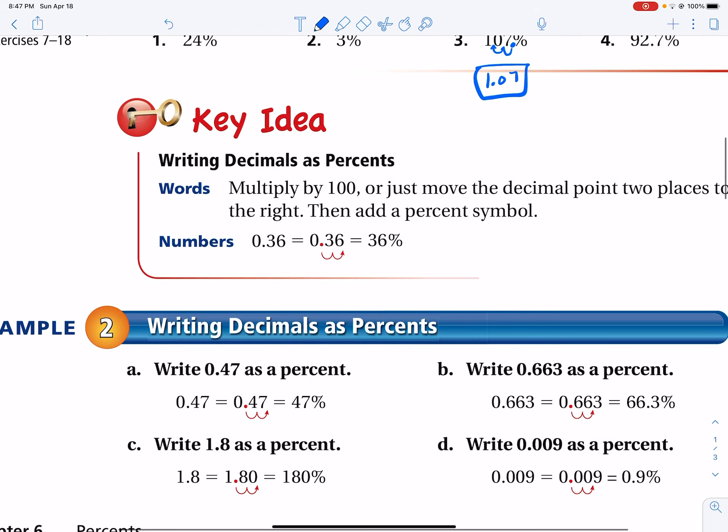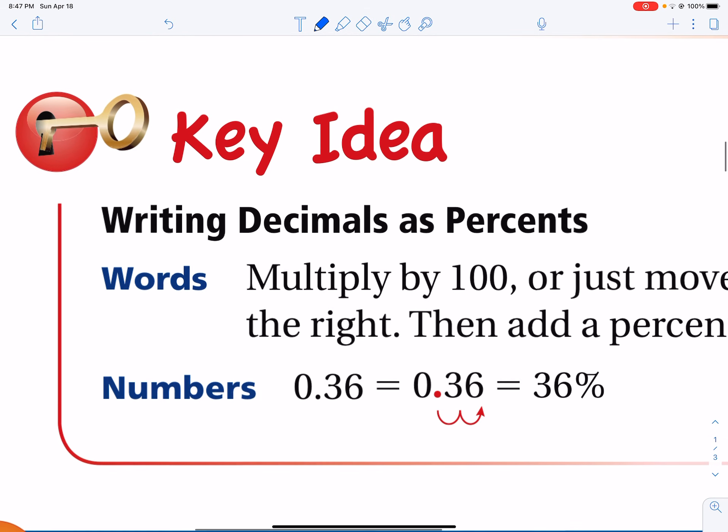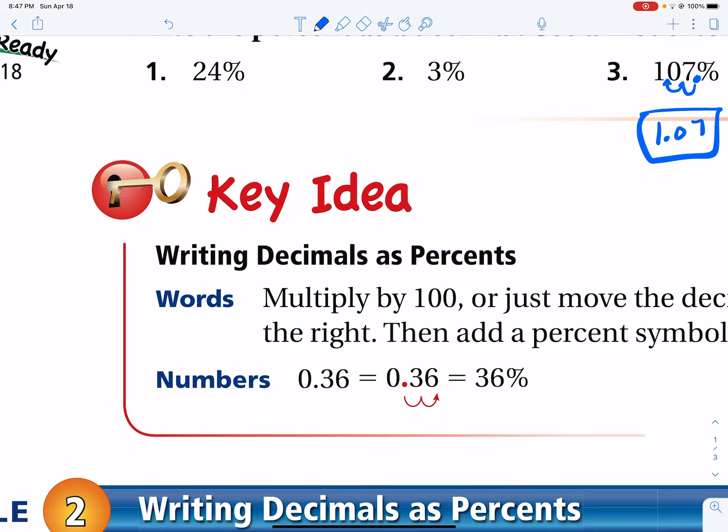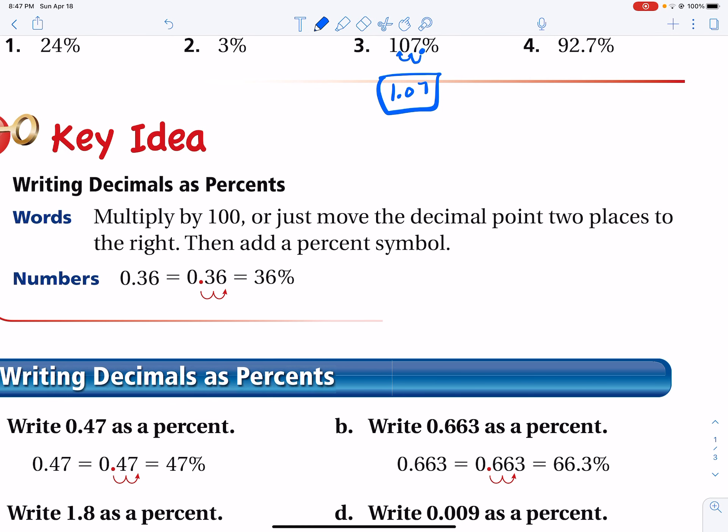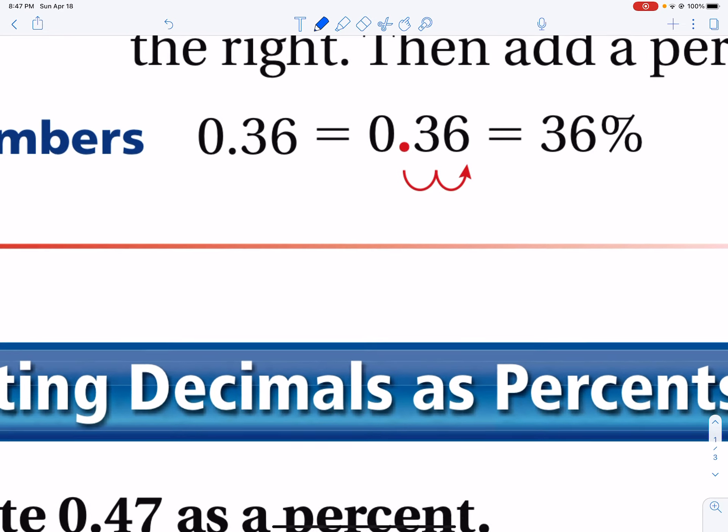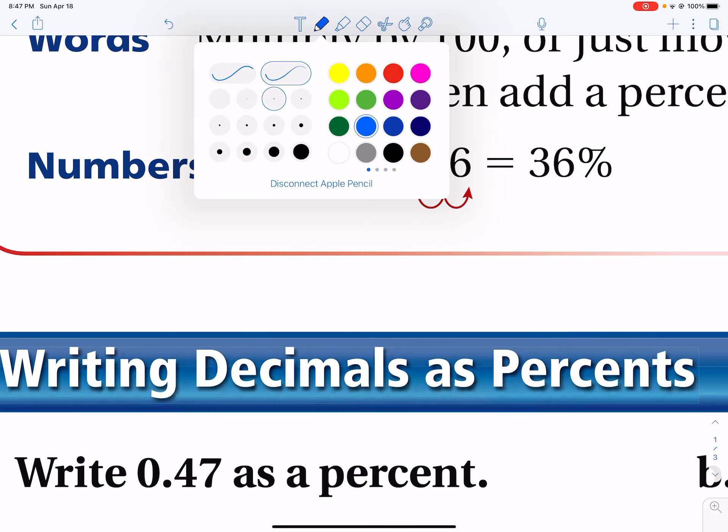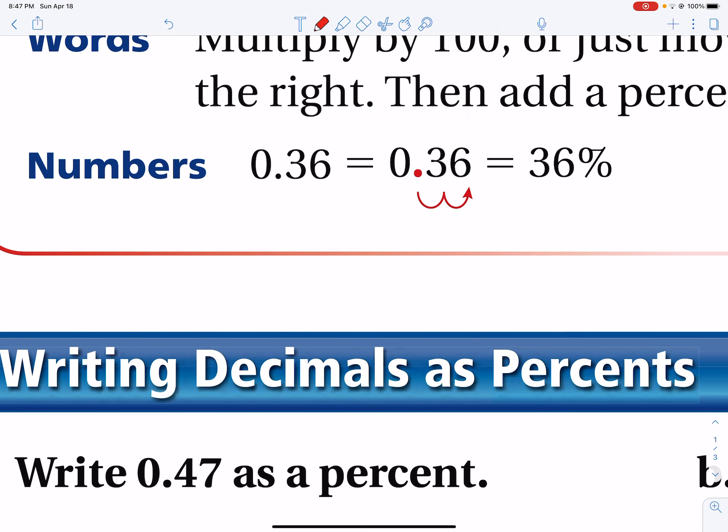Now, what about writing a decimal as a percent? Well, the idea there is that you're going to either multiply the decimal by 100 or just move the decimal two places to the right, then add a percent symbol. And so there you have it. So if I have this decimal here, one, two, it ends up here at a decimal place. Now remember, all numbers that are whole numbers, like 36, 57.